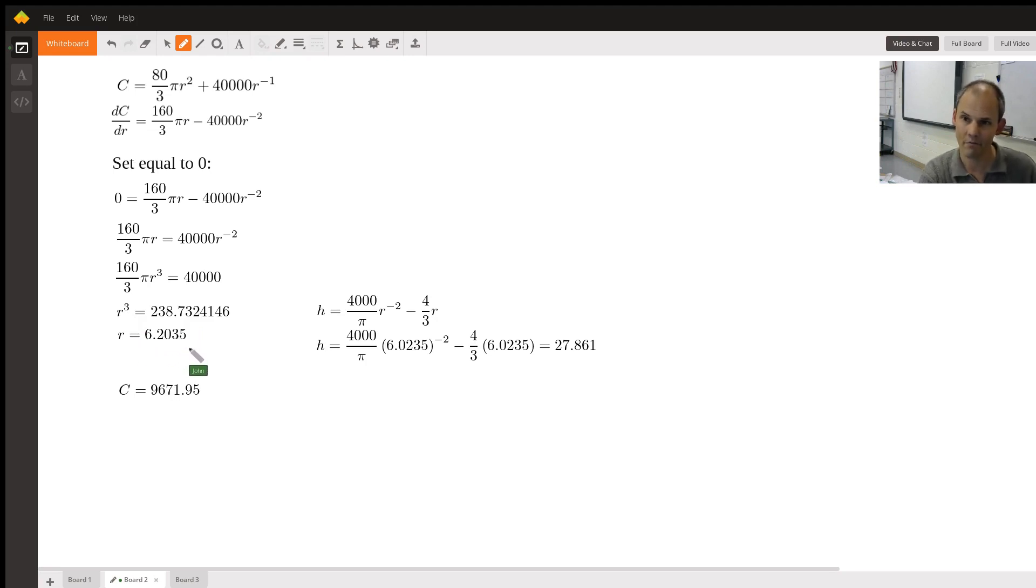Now I have a formula for height. So I go ahead and plug this in for that height. And we crunch the numbers a little bit, and we get about 27.861.